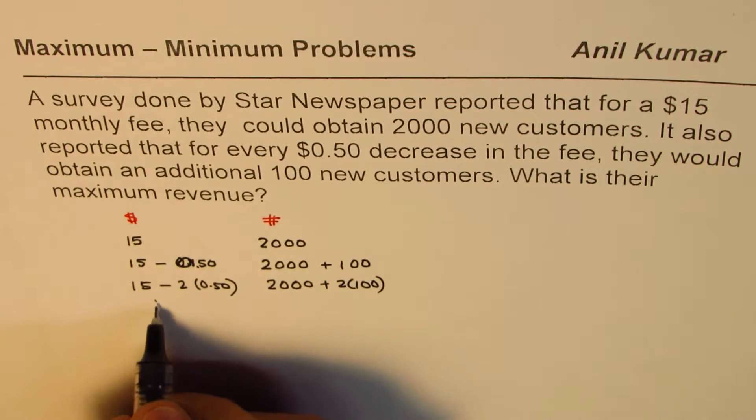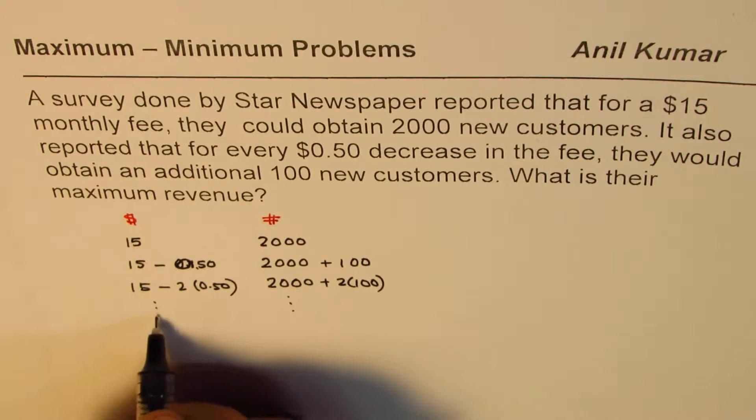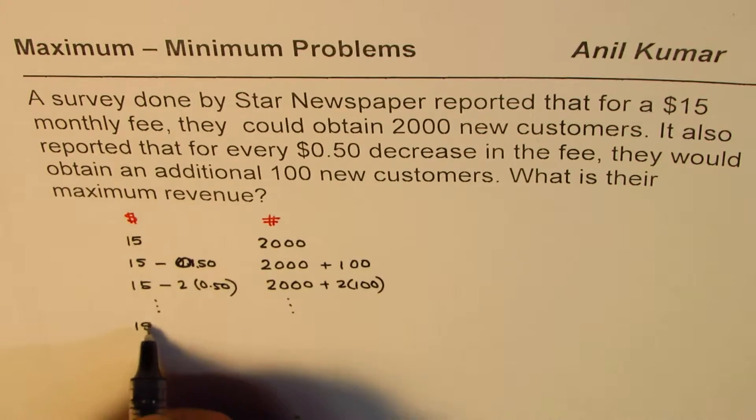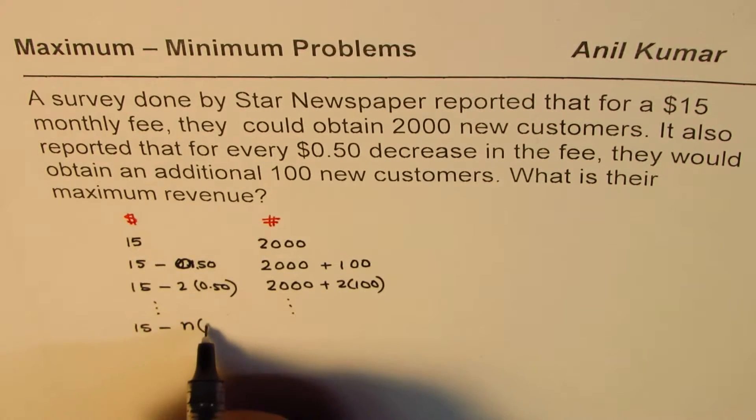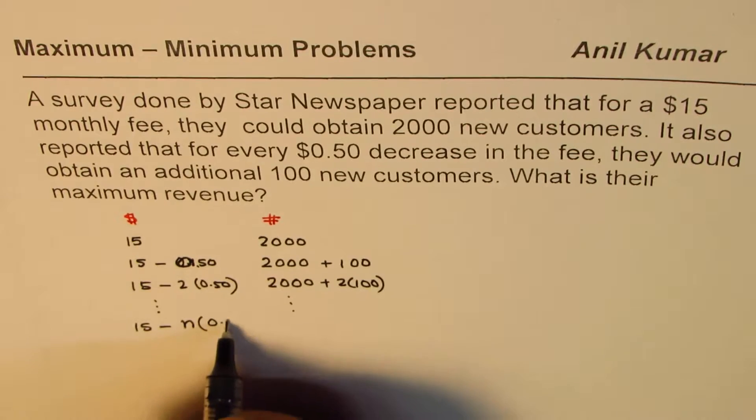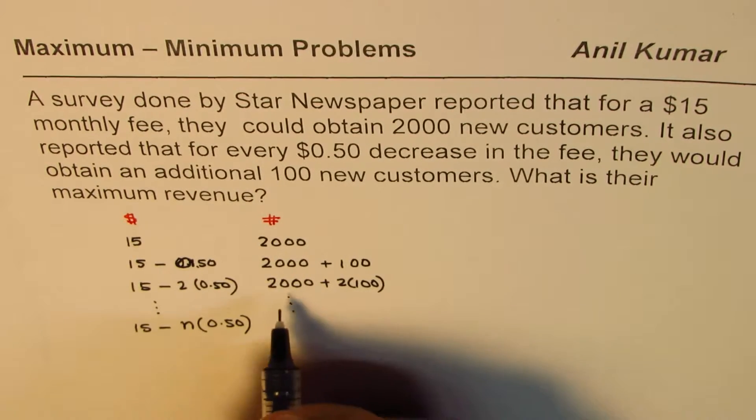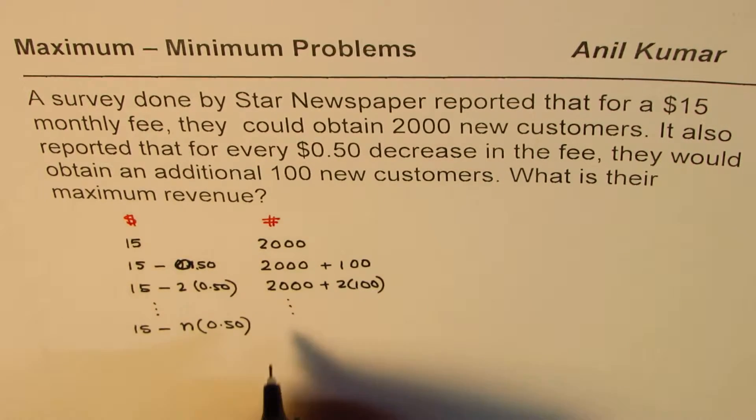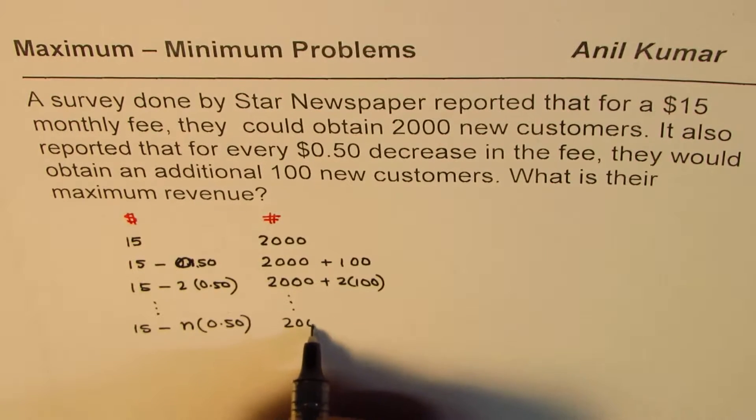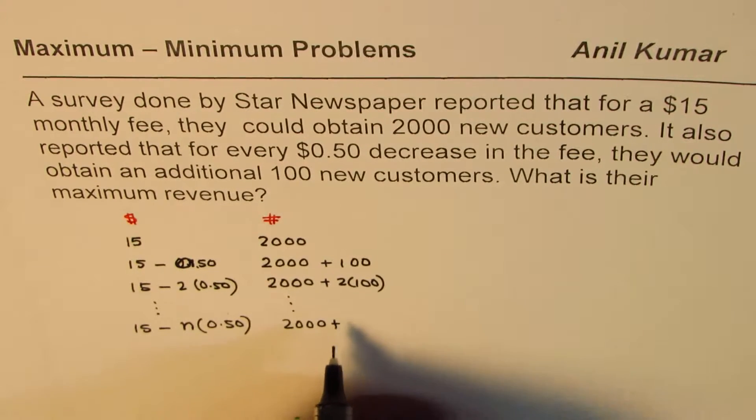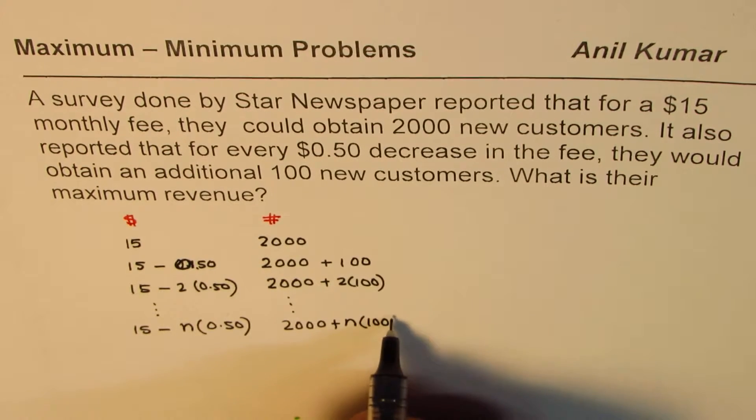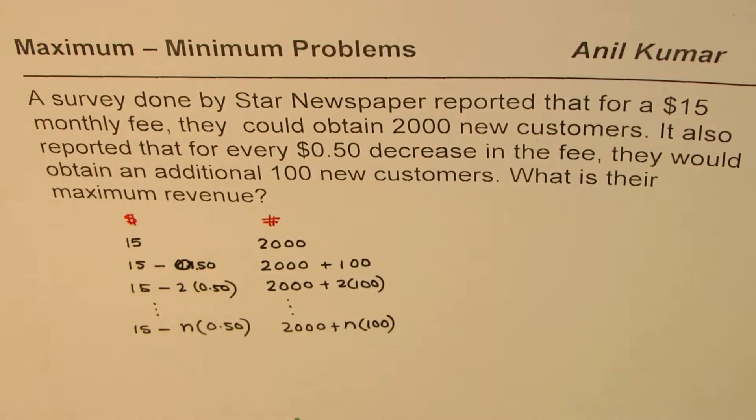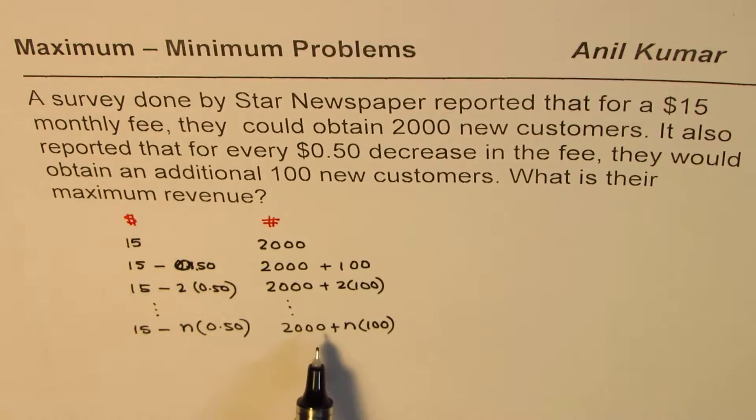So in general, if we follow this pattern, so if from 15 dollars, I decrease this to n times 50 cents, then with that trend, the number of customers will really increase to n times 100. So that is the general situation.